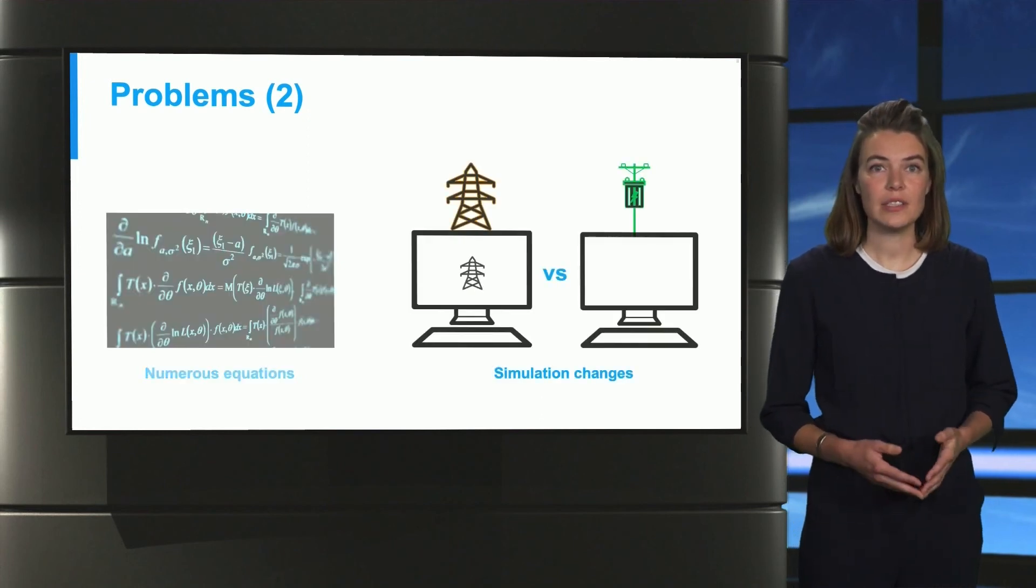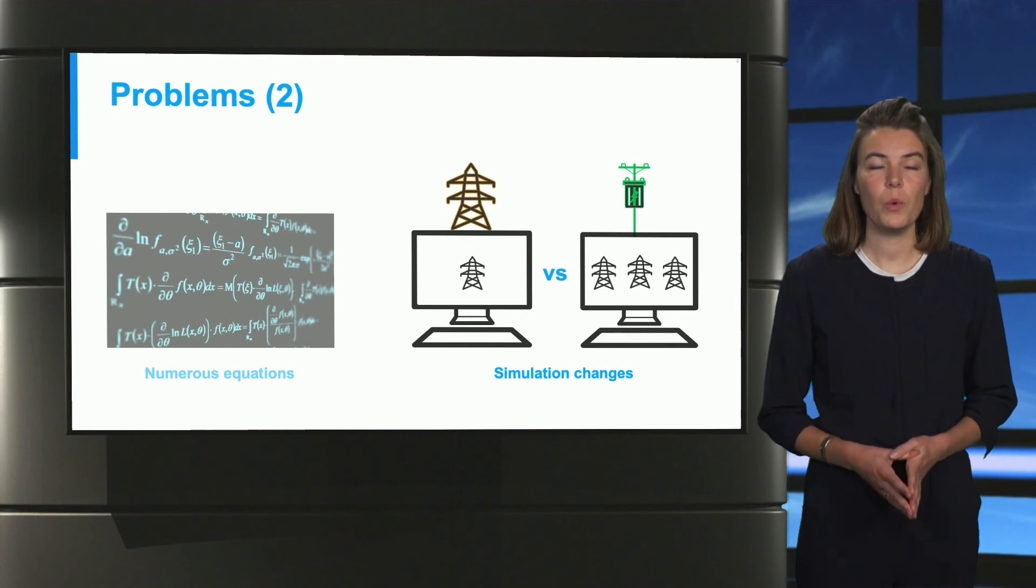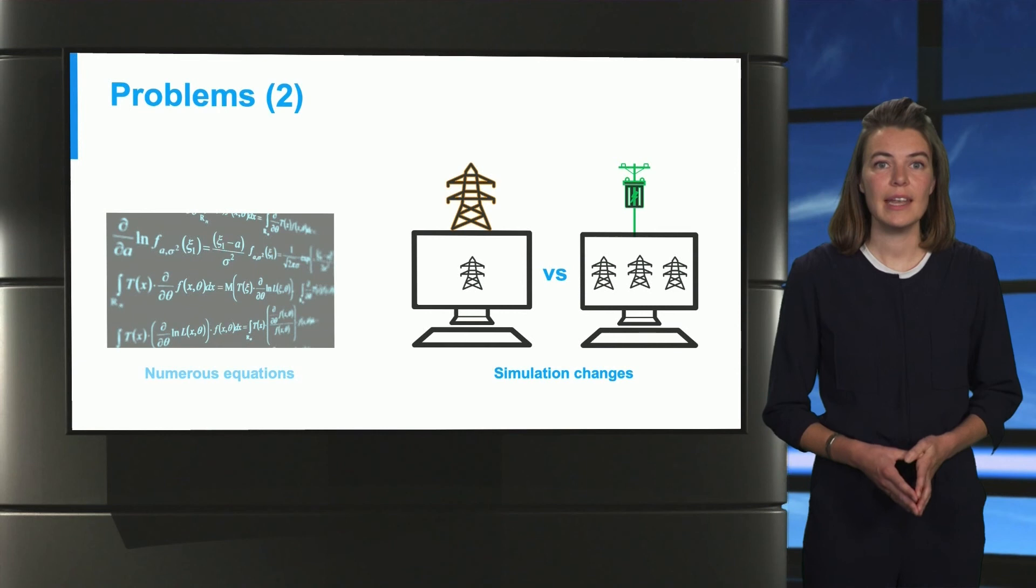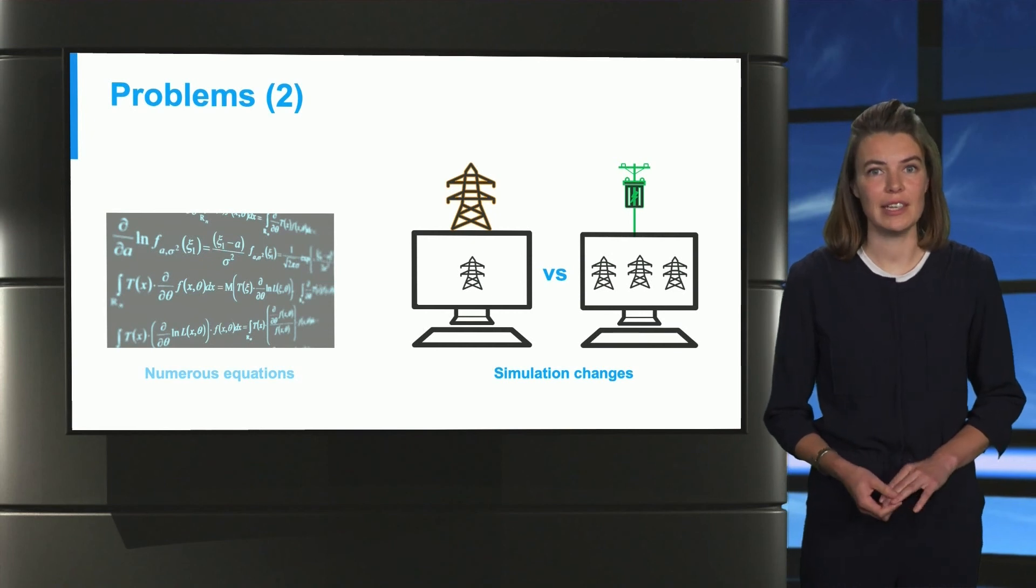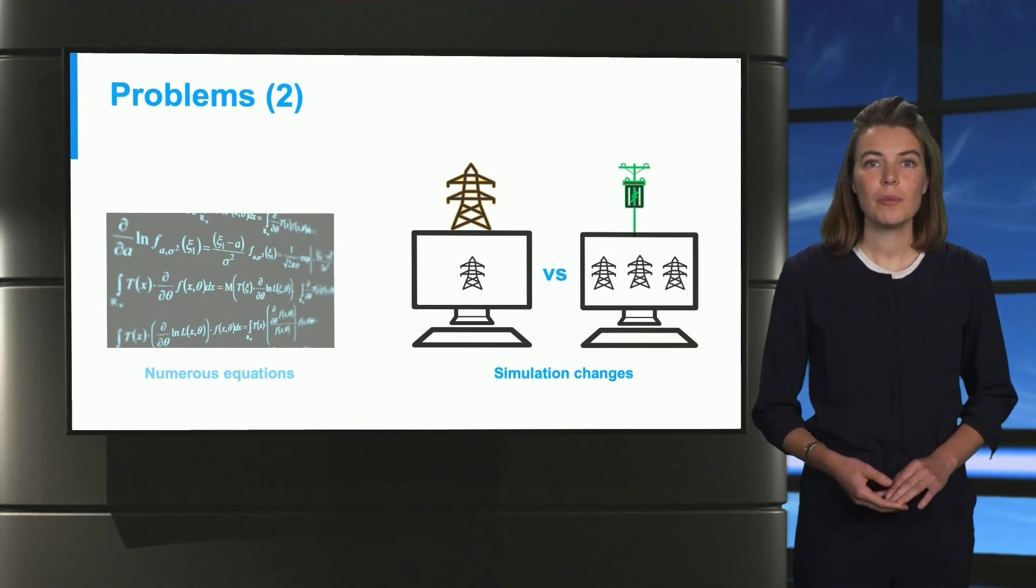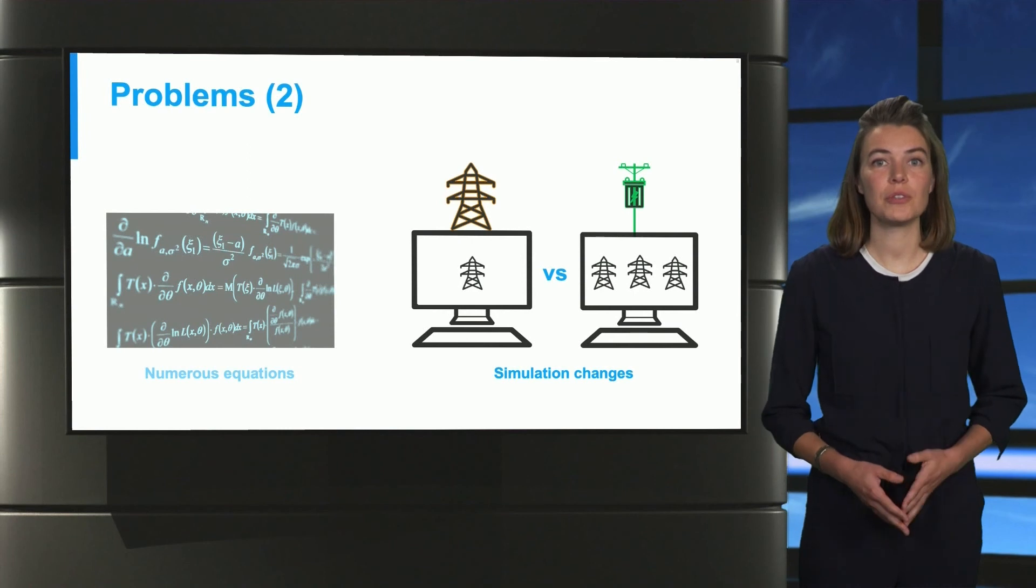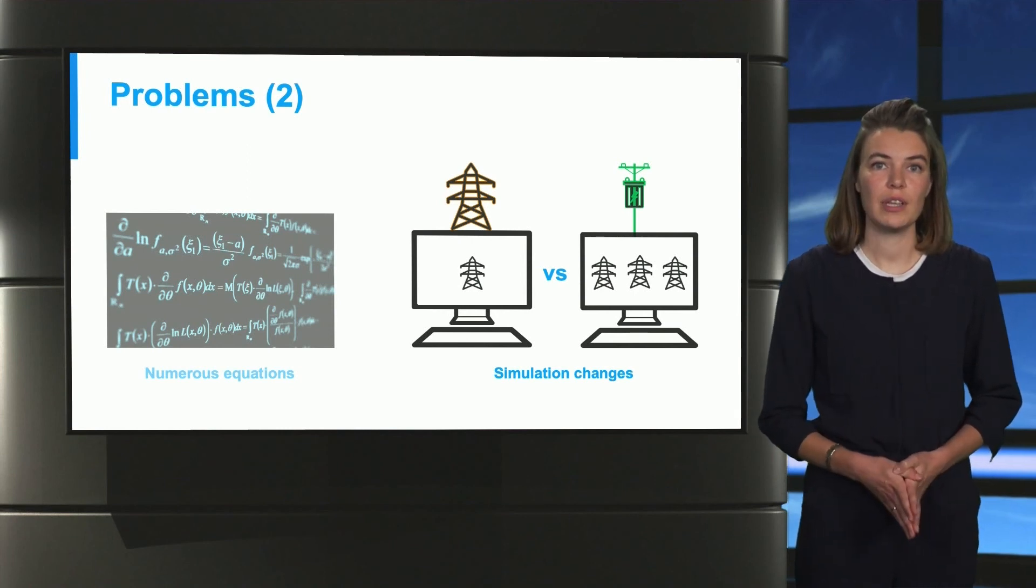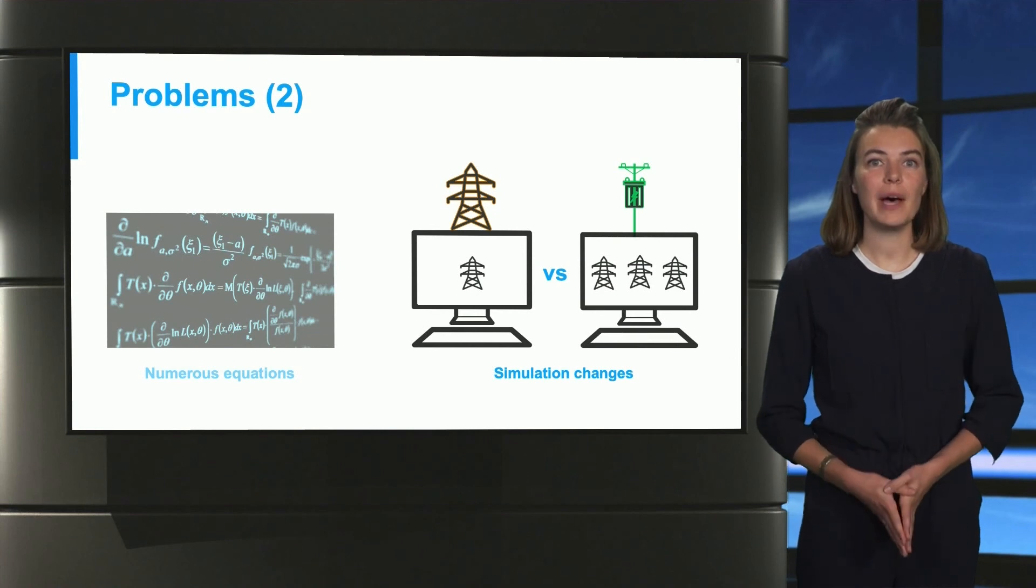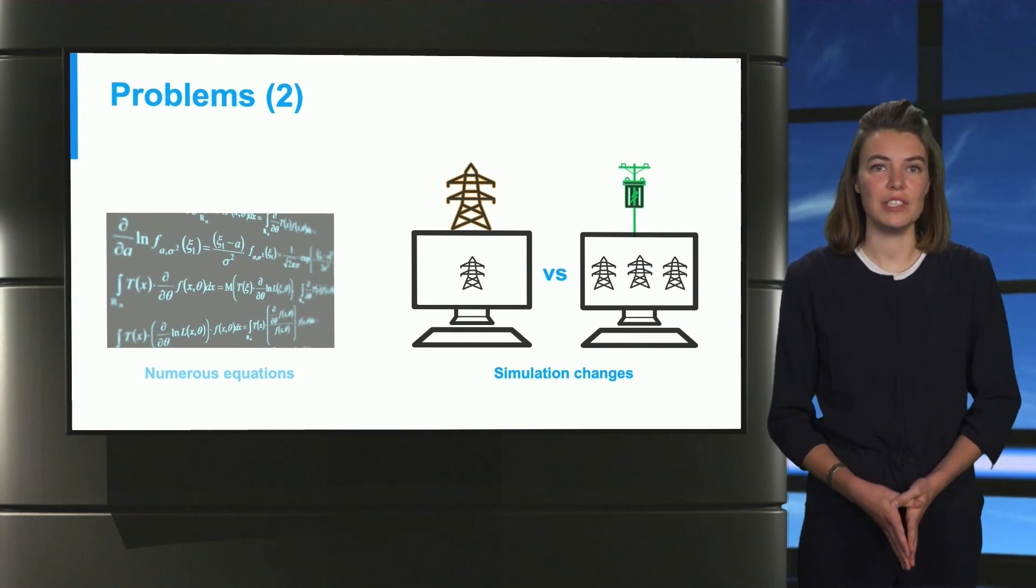When we discussed the difference between the two networks, we mentioned the differences in the balancing of the networks and needed to simulate only one or all three phases. This leads to having two different simulation techniques. We must determine if it is best to do decoupled or coupled simulation, both for the transmission and the distribution grid. And also, how can we combine them accurately and efficiently.